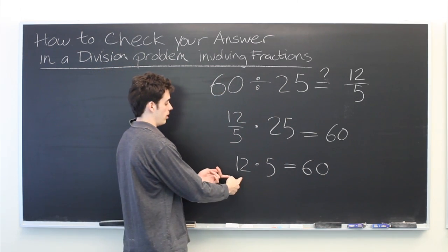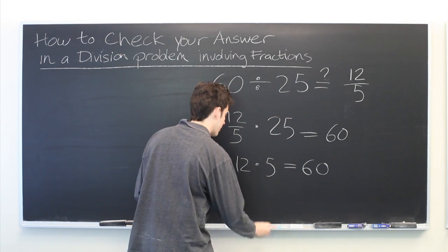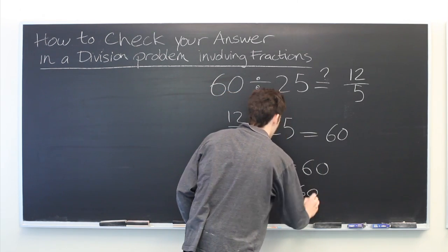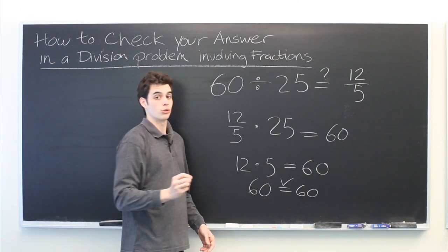And of course we can simply multiply everything on the left side. And we get 60 equals 60, which is quite obviously true.